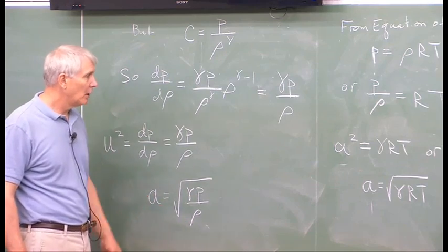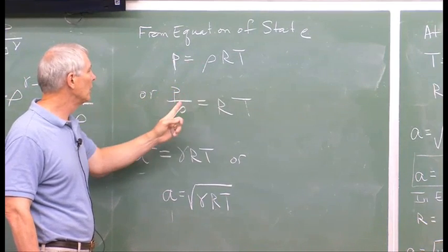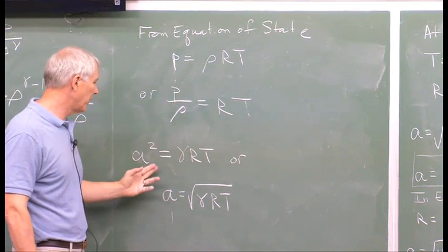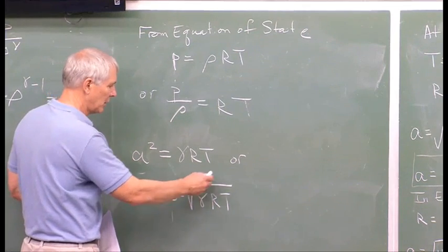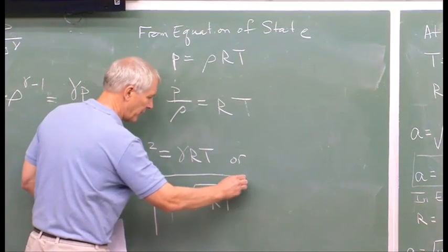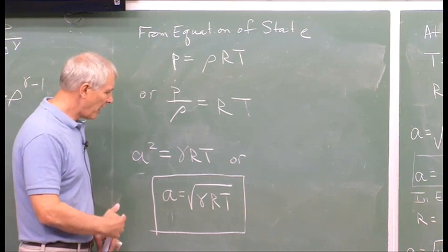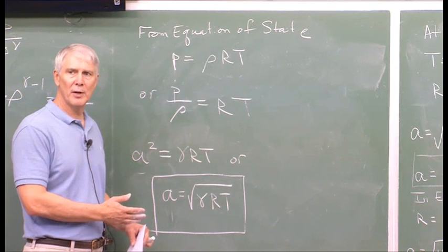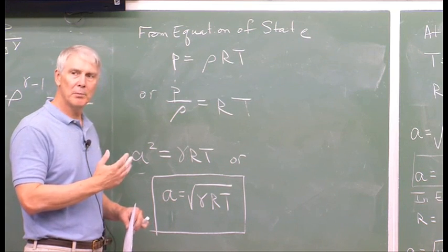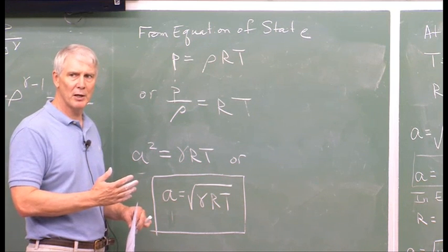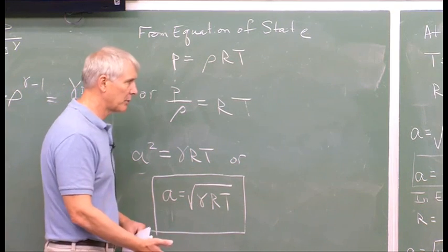The speed of sound is given by the square root of gamma·P over rho. We need to know P and rho, but using the equation of state — P equals rho·R·T — dividing by rho gives P over rho equals R·T. Plugging that in, A squared equals gamma·R·T, and so the speed of sound is equal to the square root of gamma·R·T. We've now shown that the speed of sound is related to the temperature, confirming our initial expectation that it relates to the translational speed of molecules, which in turn depends on temperature.